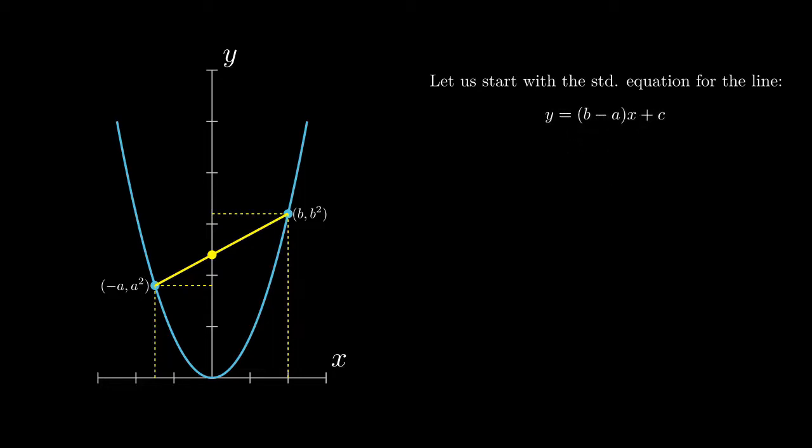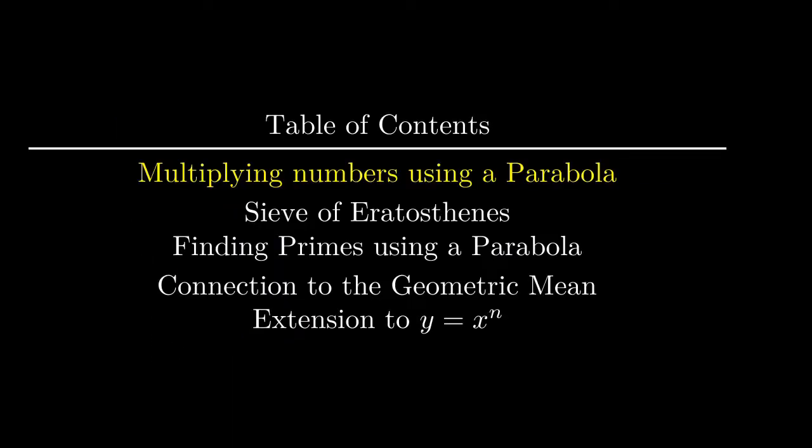After plugging in for the slope we just solved, we plug in the coordinate b, b squared, and solve for the y-intercept of the line, which yields c equals ab. Although insignificant right now, the y-intercept plays a critical role in our sieve for primes using a parabola.